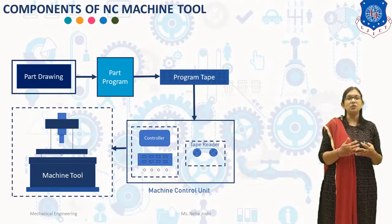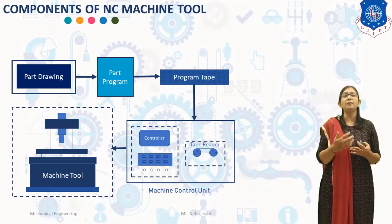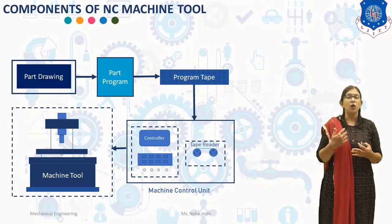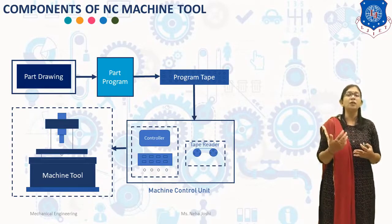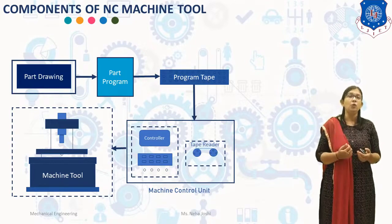The third component is machine control unit. The program tape is read by the tape reader. The controller takes input from the tape reader and actually drives the tools of the machine tool. The tape reader and the controller together form the machine control unit. The last component is machine tool, which is operated by the controller of the machine control unit.